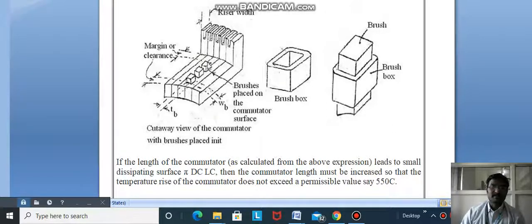This is a cutaway view of the commutator with brushes placed in it. These are the brushes in brush boxes. The brush box prevents short circuits by ensuring the positive brush is not connected with the negative brush.